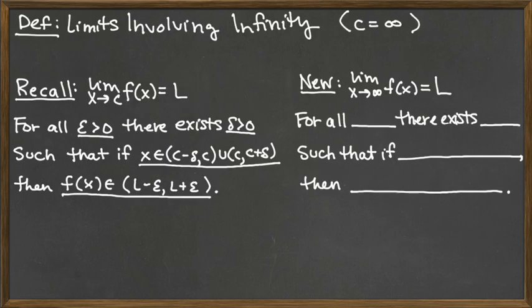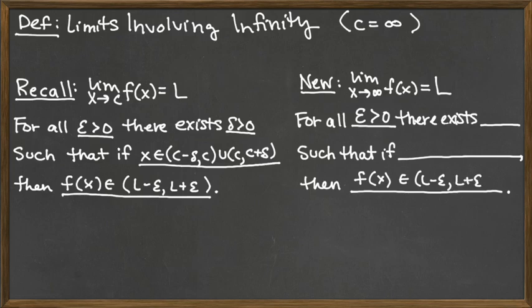What if we switch c to infinity instead, but keep L as a finite value? On the left we have the original statement with c and L both finite, and on the right our new statement where c is going to be infinity. All of the y-axis information remains the same as the original statement — we still have epsilon greater than zero, and f of x is still in the range L minus epsilon to L plus epsilon — because we kept our L finite for this case.